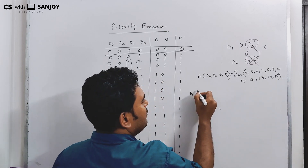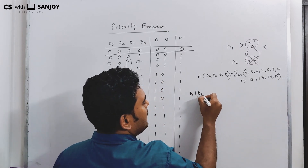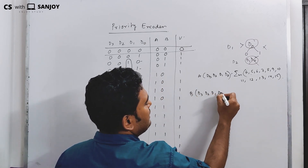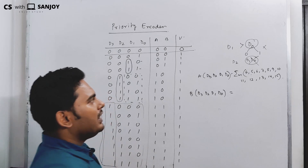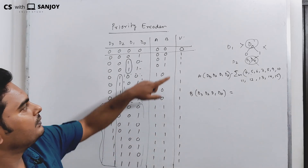Now for output B: inputs are D3, D2, D1, D0. We will look at where B equals 1 in the K-map.